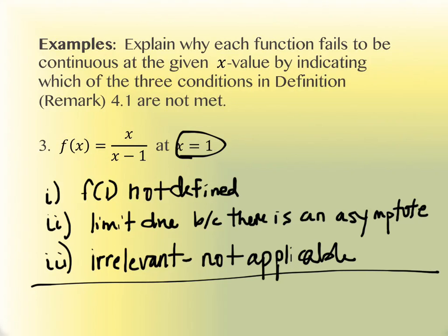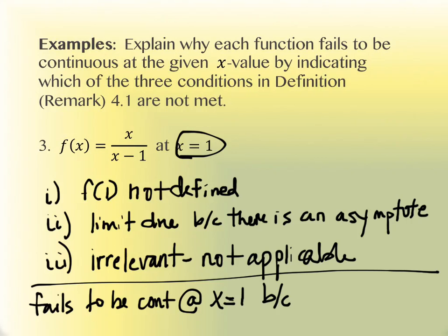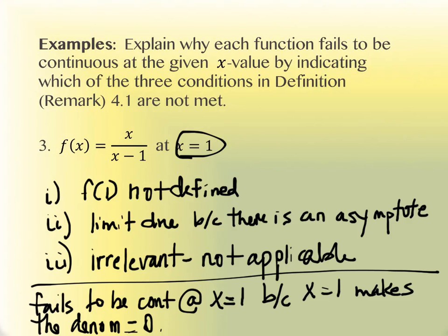So this fails to be continuous at x equals 1 because x equals 1 makes the denominator equal to 0, and what really happens there is an asymptote. Notice if this had actually been reducible and I could have simplified it, f(1) still wouldn't be defined, but the limit would actually exist. So the second piece failing would then automatically make the third piece fail because they don't match.